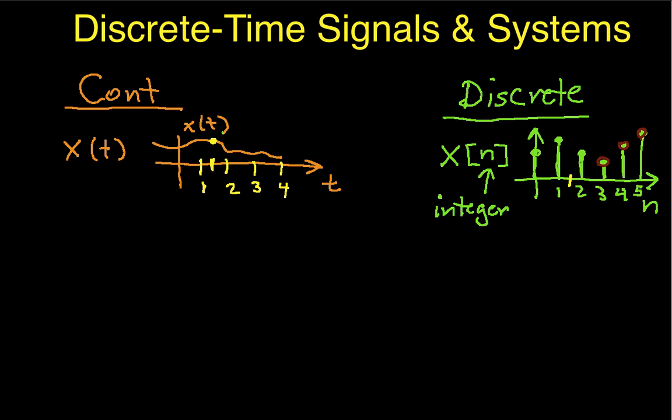On the other hand, if I come over here and ask you, what's the value of this signal between 1, or at 1.5? You would not be able to tell me, because this signal only has values defined at 1 and 2. So anywhere between 1 and 2, there is no value defined for a discrete time, or for this discrete time signal. So, that's the difference. Discrete time signals have values only at integer points.